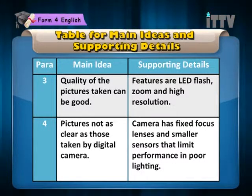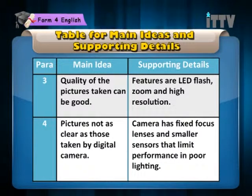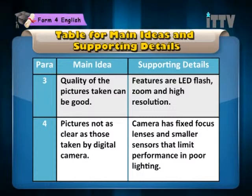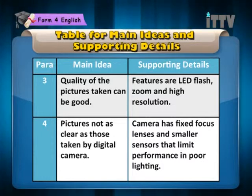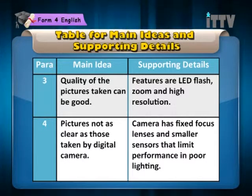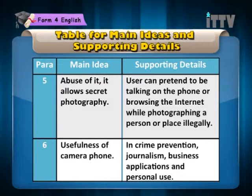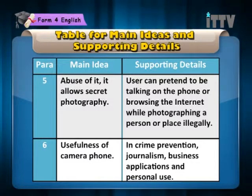Paragraph 3: Main idea — quality of the pictures taken can be good. Supporting details — features are LED flash, zoom and high resolution. Paragraph 4: Main idea — pictures not as clear as those taken by a digital camera. Supporting details — camera has fixed focus lenses and smaller sensors that limit performance in poor lighting. Paragraph 5: Main idea — abuse of it allows secret photography. Supporting details — user can pretend to be talking on the phone or browsing the internet while photographing a person or place illegally.